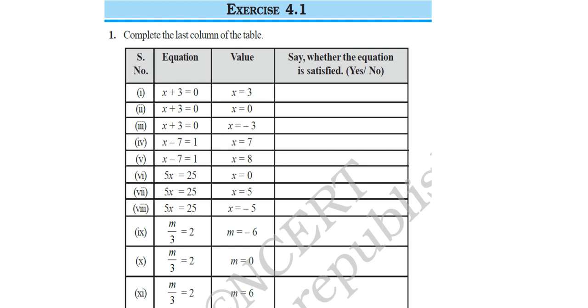Here, you have HSS 4.1 to complete the last column of the table. One equation is given, that is, x plus 3 is equal to 0. And value of x is given as 3. Now, you have to check whether the equation is satisfied or not. Here, x plus 3. If x is equal to 3, it will be 3 plus 3. You will get 6, not 0. So, in the first case, the equation is not satisfied. So, you can write no. Similarly, do fill the other columns.